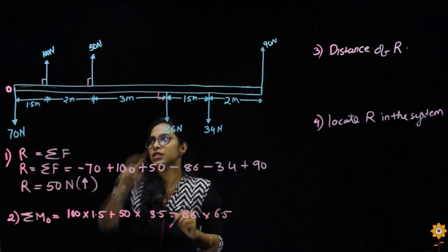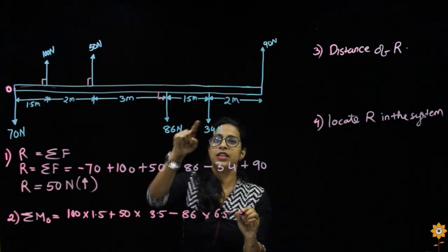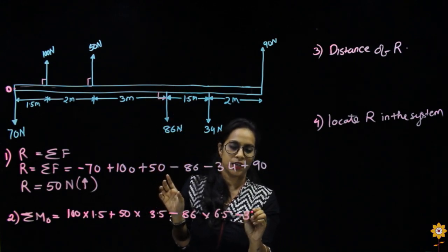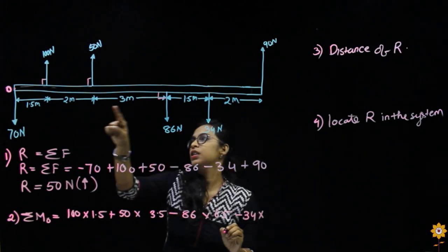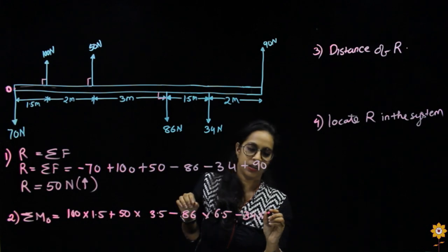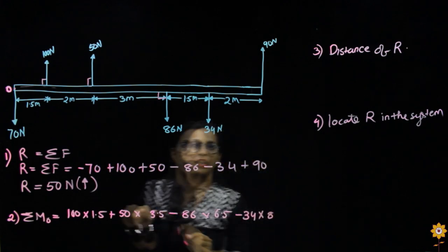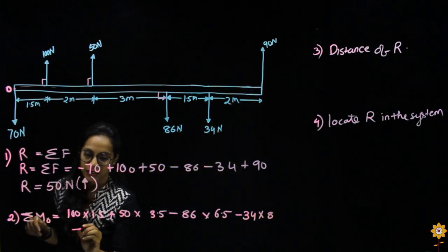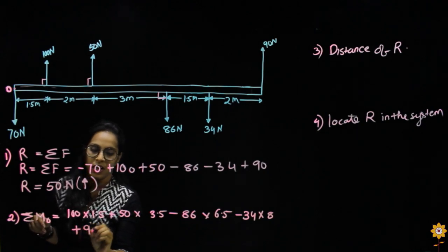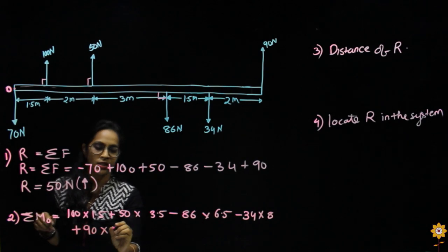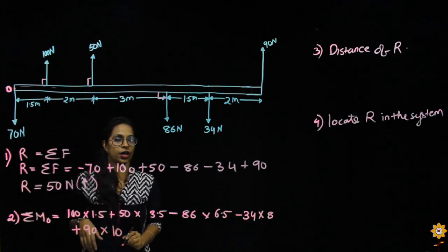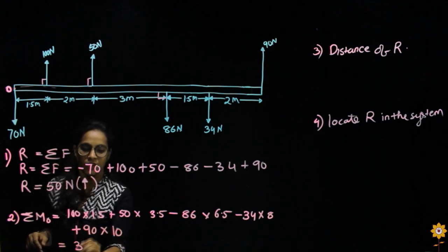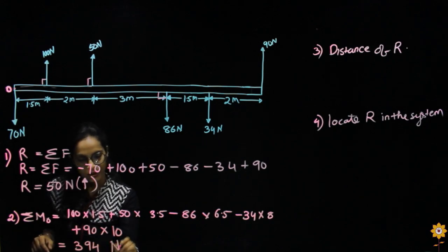6.5 is the perpendicular distance from O for the 86 Newton force. The next value is 34 Newton, also in the clockwise direction, so it is minus 34 into 7.8. The next force is 90 Newton going anticlockwise, so it is plus 90 into 10 — the complete distance. If you calculate all these moments, you get the answer to be 394 Newton meter, since moment is force into perpendicular distance.